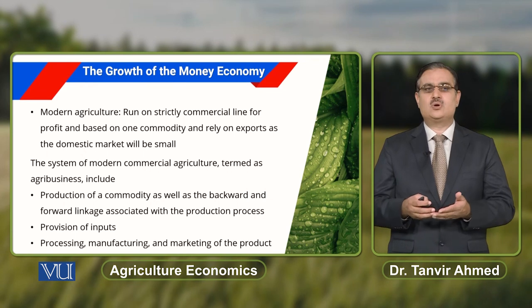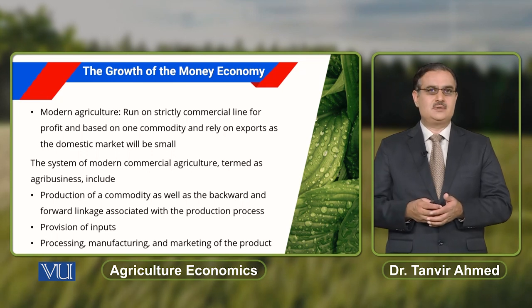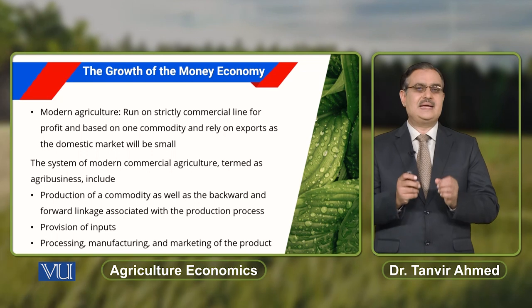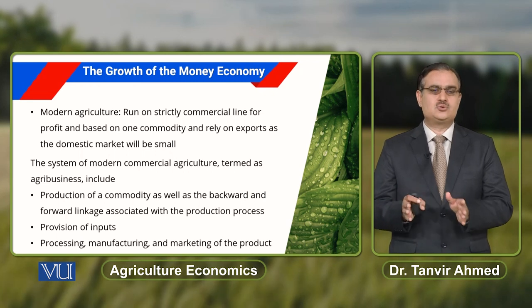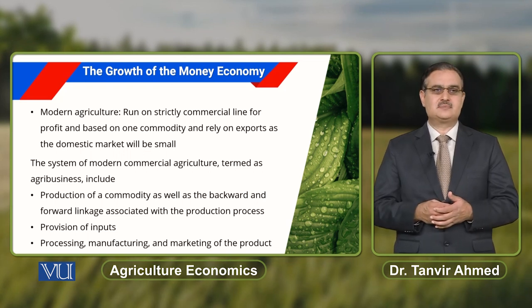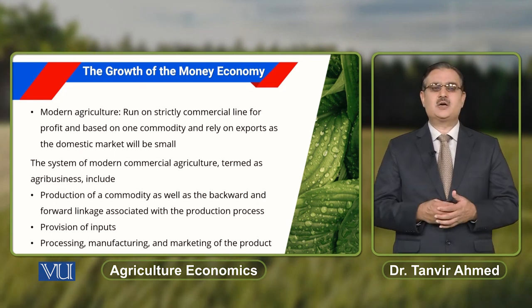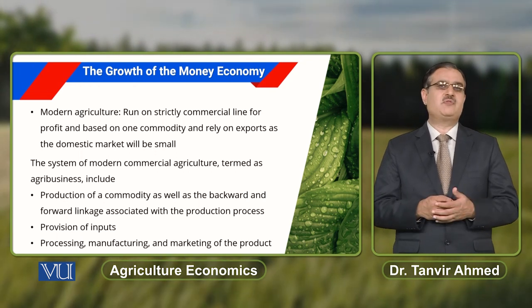When we talk about modern agriculture, the entire production is for the market. Modern agriculture is run strictly on commercial lines for profit, based on one commodity, and relies on exports as the domestic market will be small. When you have commercial-level production of agricultural output, the domestic market is usually small, so output relies on the export sector.